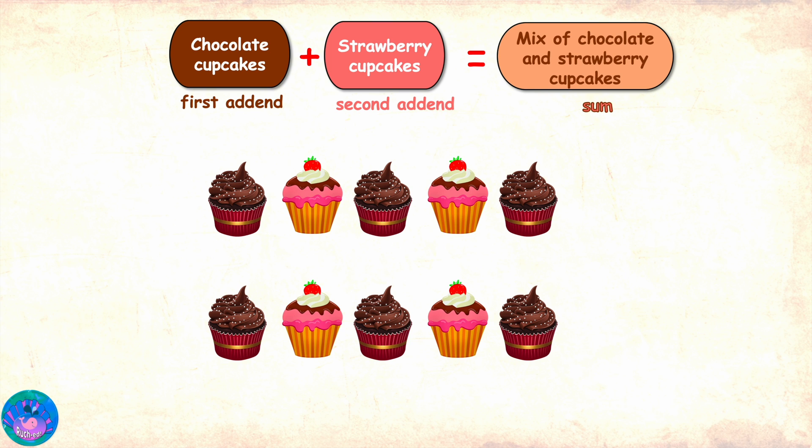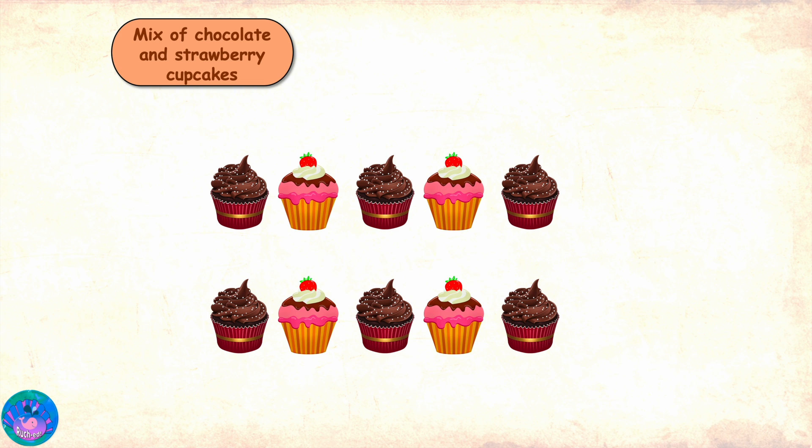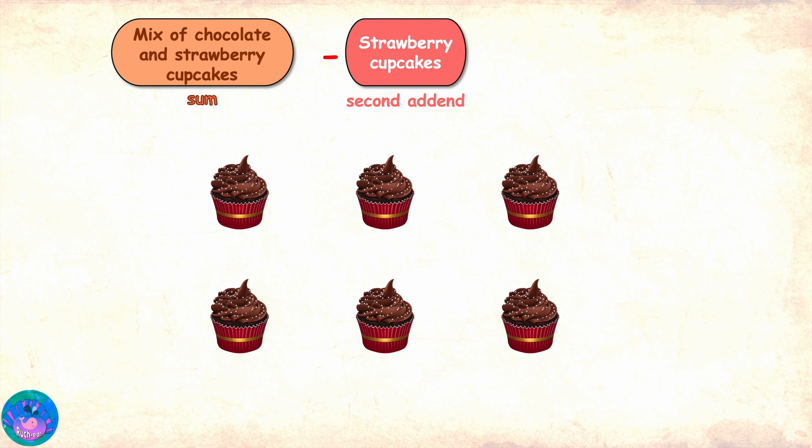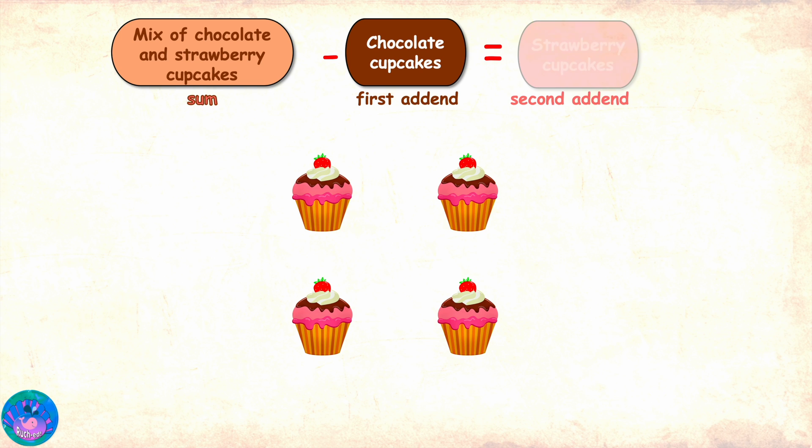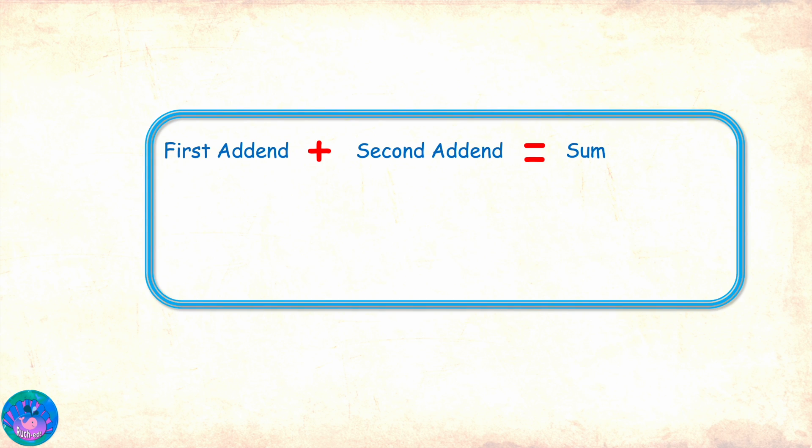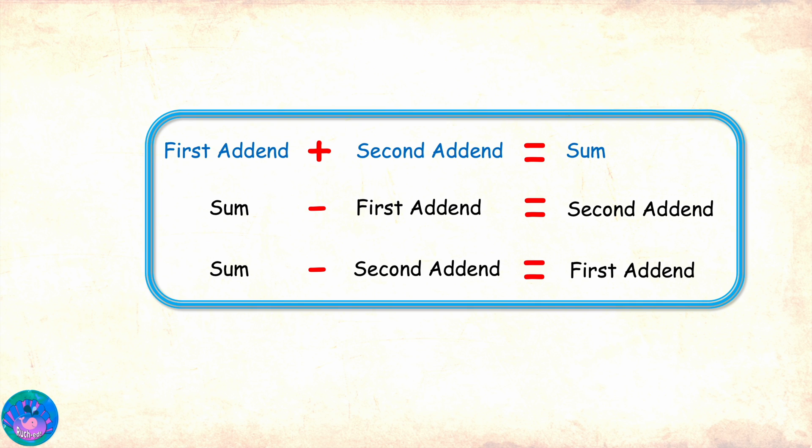Now notice when from the mix of cupcakes or the sum, we take away strawberry cupcakes, the second addend, we are left with the first addend, chocolate cupcakes. And similarly, if from the mix or sum, we take away the first addend, the chocolate cupcake, then we are left with the second addend, the strawberry cupcakes. So to summarize, we already knew that first addend plus second addend gives us the sum. Now we also know that sum minus first addend gives us the second addend and sum minus second addend gives us the first addend.